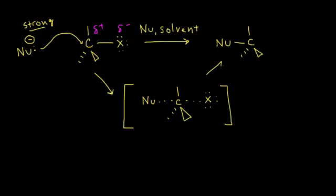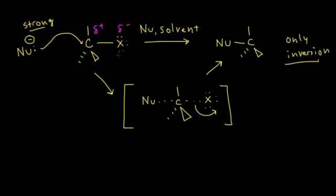Because the nucleophile attacks from the opposite side of the leaving group, when the leaving group finally leaves at the same time the bond between the carbon and nucleophile forms, you get only inversion of configuration. We started with our halogen on the right, and our nucleophile ended up on the left. That's the only product from this SN2 reaction.